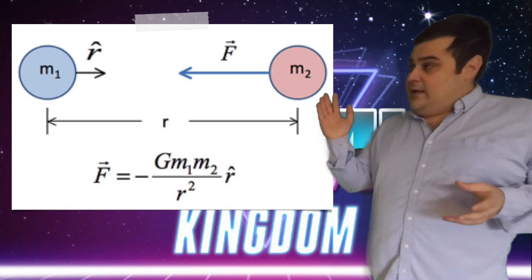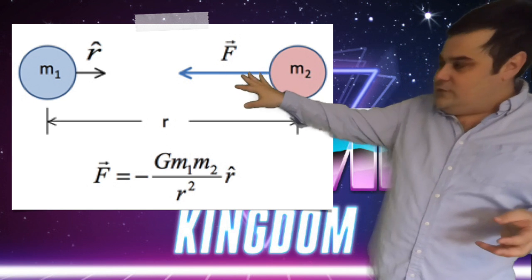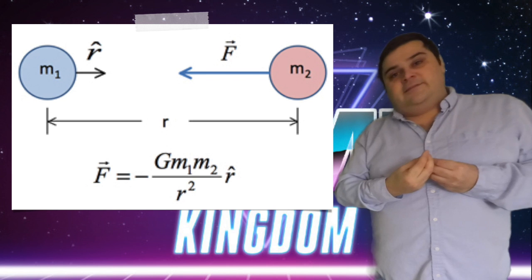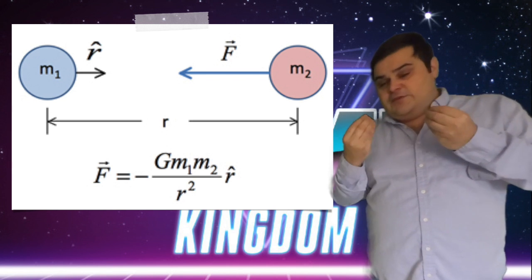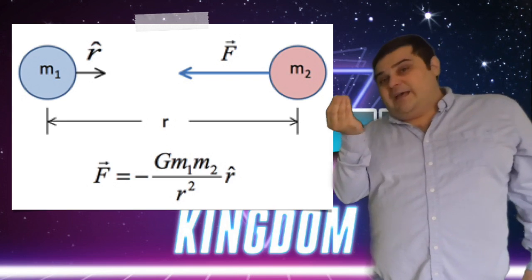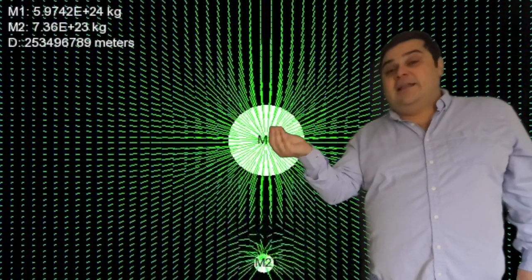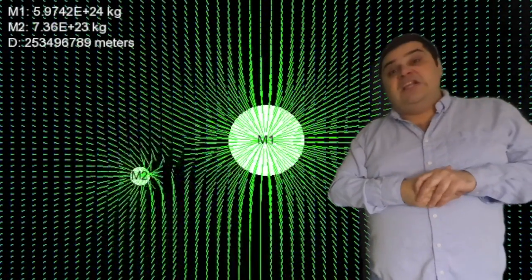Instead of thinking of gravitation or electrostatic interaction as a force between two bodies, what he proposed, using his intuition, is that the moment you have a mass, that mass is creating a field around it. Or if you have a charge, that charge is creating an electromagnetic field around it. If you place another mass or another charge in the field, they will interact with it.